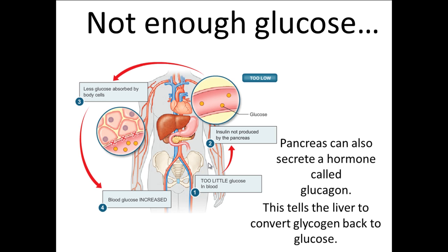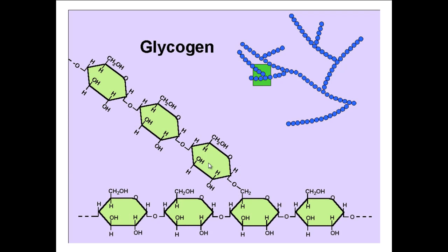Glycogen is just a polymer chain, so it's very similar to starch. You've got your individual monomer units, which are glucose molecules, and these are broken off one at a time and released back into the bloodstream.